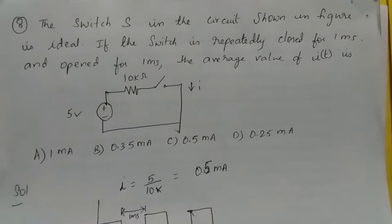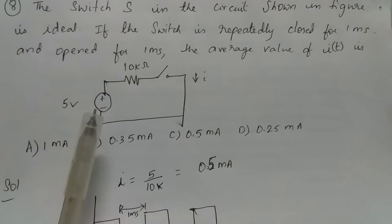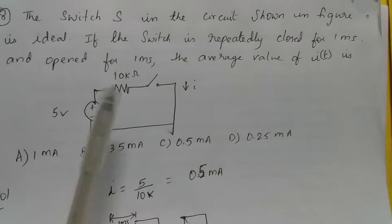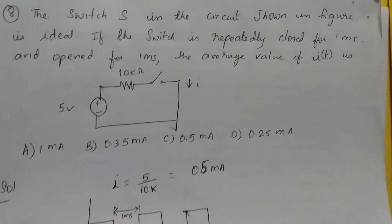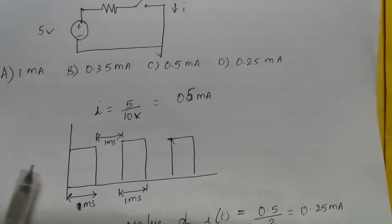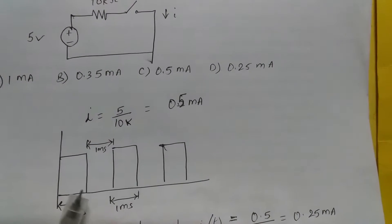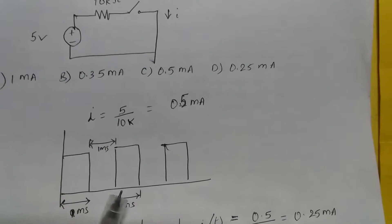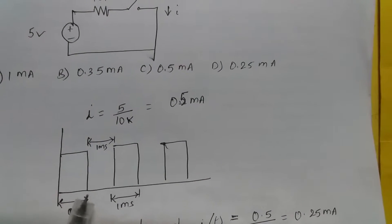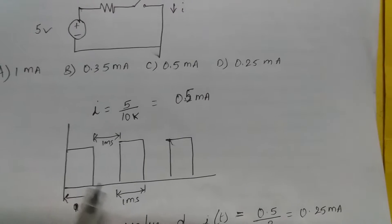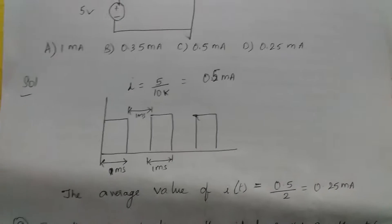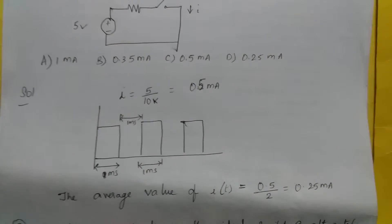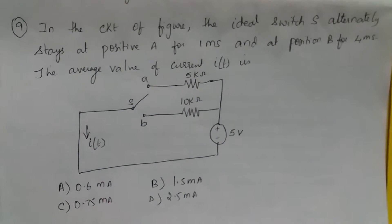When the switch I is closed for 1 millisecond, I equals 5 divided by 10K, that is 0.5 milliamps. When it is open, the current I is 0. So for 1 millisecond the current is 0.5 milliamps, and for the remaining time when the switch is open it is 0. The average value is 0.5 plus 0 divided by 2, that is equal to 0.25 milliamps. So the right answer is D.